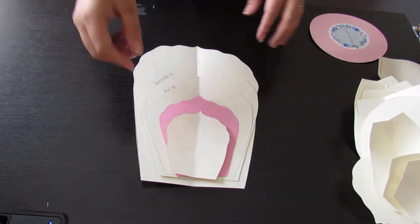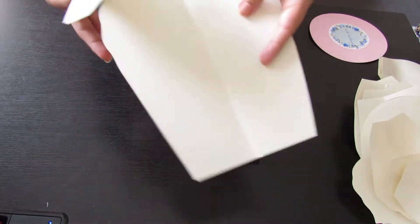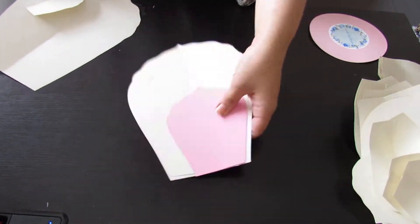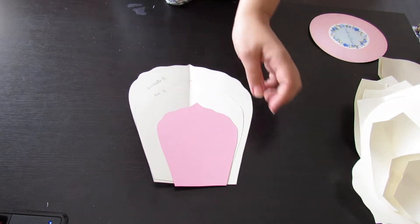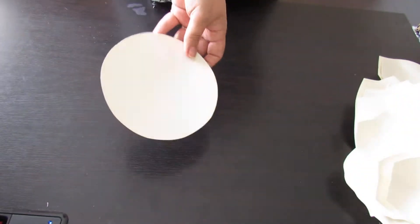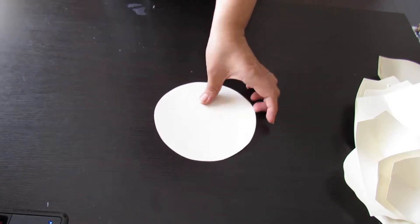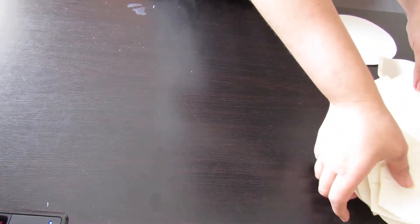For today, what you're going to need is obviously your templates. We're going to use the second, third, and fourth one, so we're not using the smallest and the largest. You're going to trace out six of each onto cardstock, any color of your choice. In your packet, you also receive three different size circles. Go ahead and trace out the largest one, the same color as the flower that you will be creating.